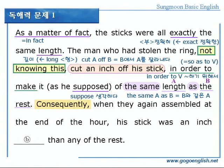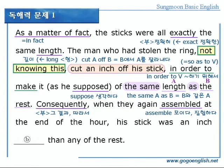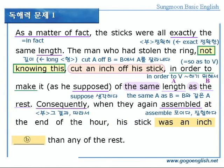계속합니다. consequently, 부사로, 그 결과, 따라서, 라는 의미입니다. when they again assembled, assemble은 모이다, 집합하다의 의미로, 그들이 다시 모였을 때, at the end of the hour, 그 한 시간이 끝날 무렵에, his stick, 그의 막대기, 그 도둑의 막대기는, was an inch blank, 1인치 더 blank했다, than any of the rest, 나머지 막대기들보다.